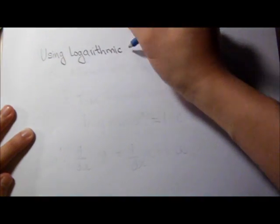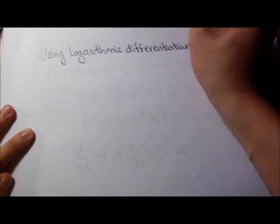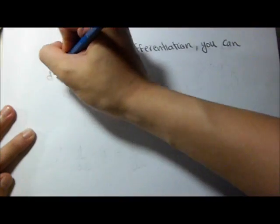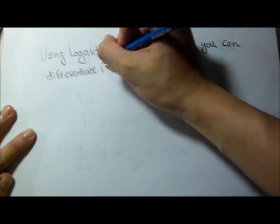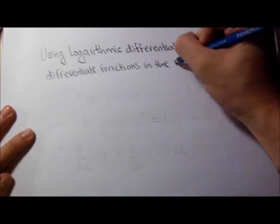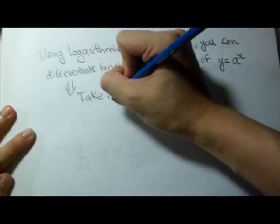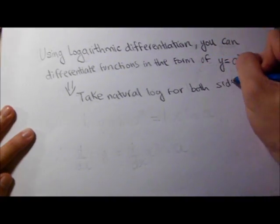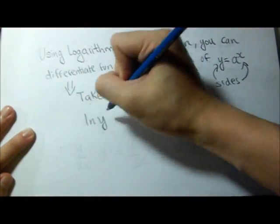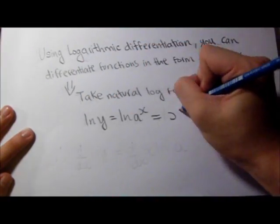Using logarithmic differentiation, we can differentiate functions in the form of y equals a to the x, where a is a constant, meaning it could be a number like 5, 10, or 15. And to find the general formula for the derivative, we must first take the natural log of both sides, meaning that ln y equals ln a to the x, so it is written as x ln a instead.